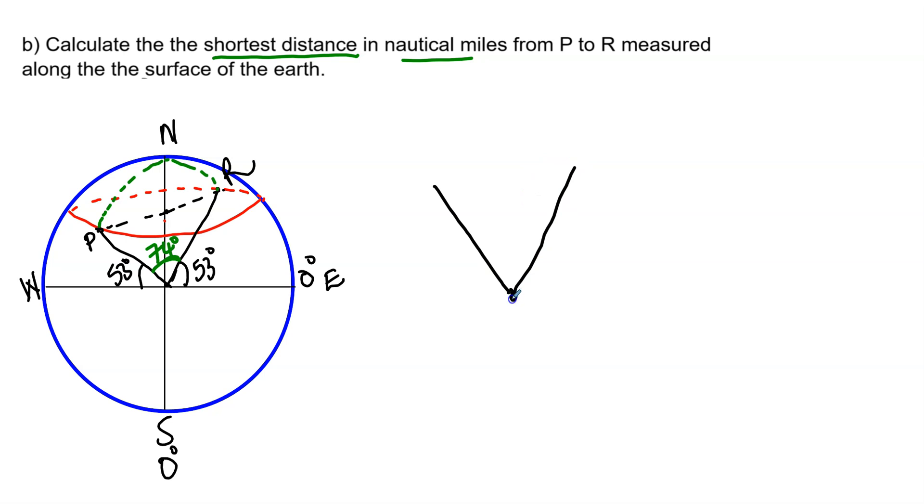That's the center of the earth. And then I have this arc. That's the surface of the earth. This is the radius of the earth. Radius of the earth. And this angle here is 74 degrees. So the distance from P to R in nautical miles is going to be equal to 60 minutes times 74 degrees, which is going to be equal to 4440 nautical miles.